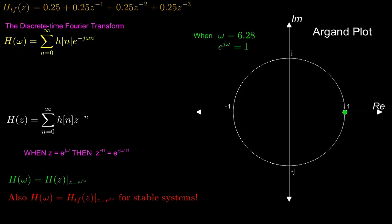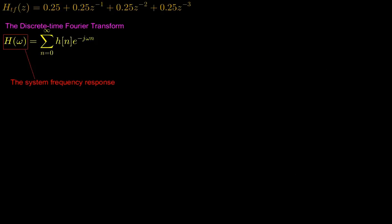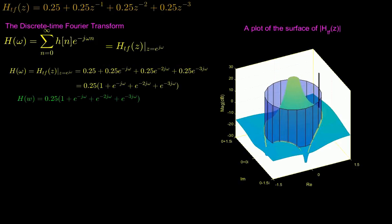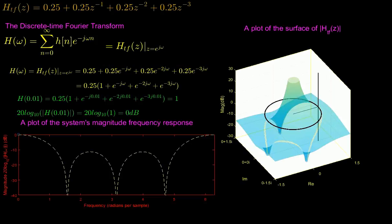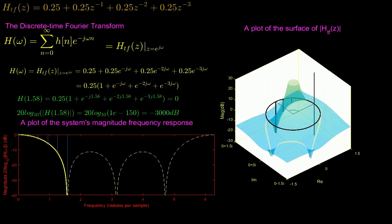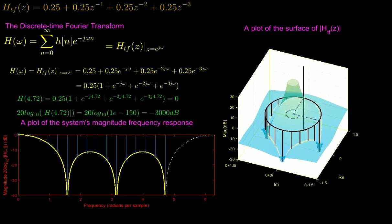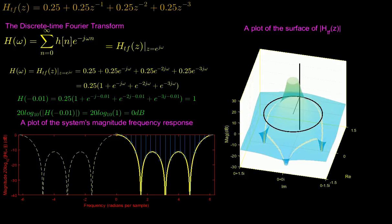So this is why the frequency response of a system is the intersection of the surface of H(z) with a cylindrical surface which surrounds the unit circle. So by evaluating H(z) around the unit circle, we can obtain the frequency response, and the beauty of the unit circle is that it captures the repeating elements of the frequency response of a system.